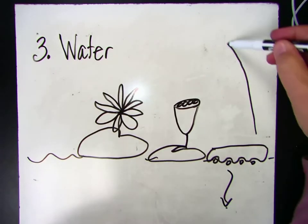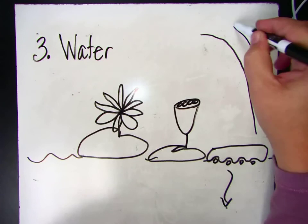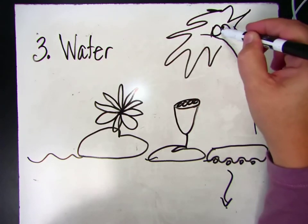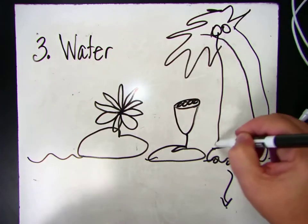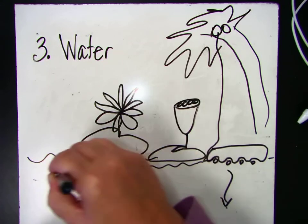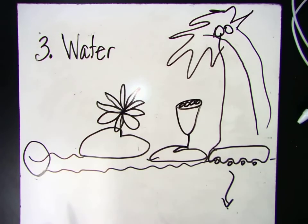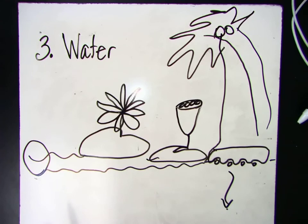Coconut trees do the same thing. My beautiful coconut tree. There's the coconuts, and the coconuts fall into the water, and they go along the water, and they might end up in another place and become another palm tree.